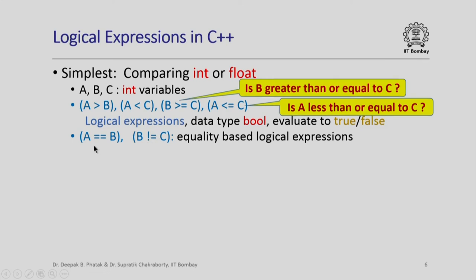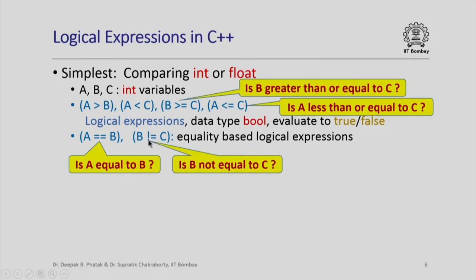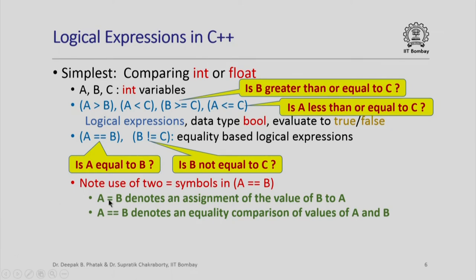We also have equality-based logical comparisons. The operator == (two equal symbols) checks if a and b are equal, while the operator != (exclamation symbol followed by equals) checks whether b is not equal to c. The important distinction is that a single equals sign (=) in an assignment statement assigns the value of b to the variable a, whereas == is an equality comparison asking if the values of a and b are equal.